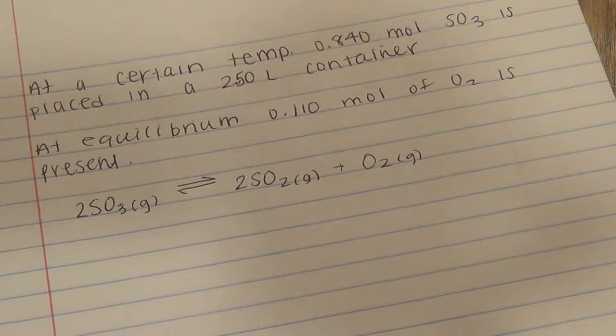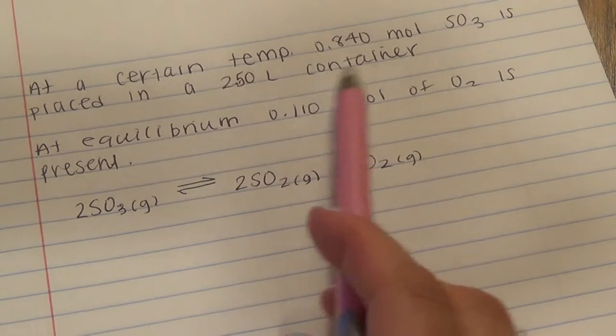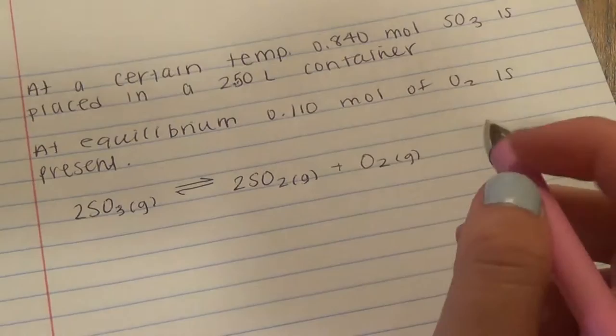So we are starting with 0.84 moles of SO3 in a 2.5 liter container. So first, before we begin, we'll have to calculate this into molarity. So to do that,